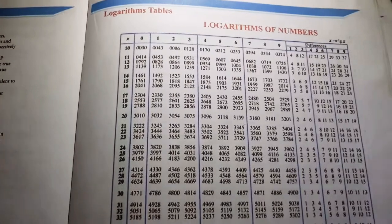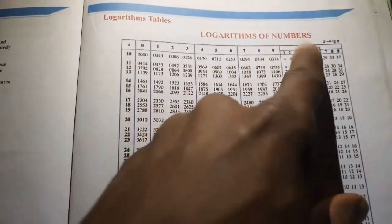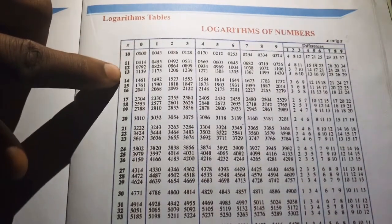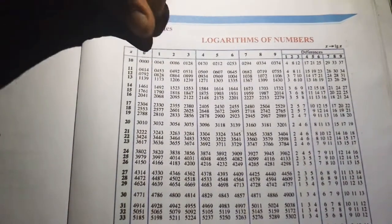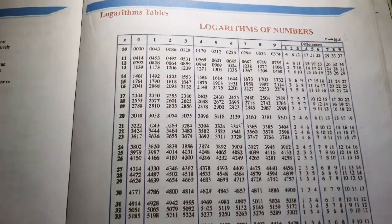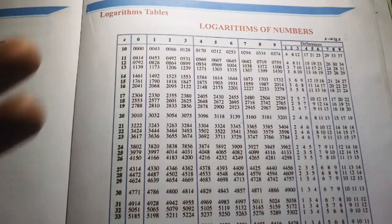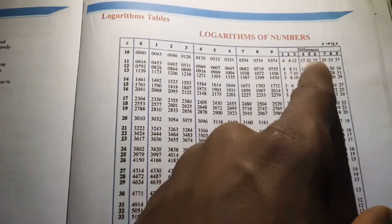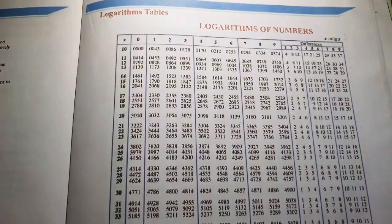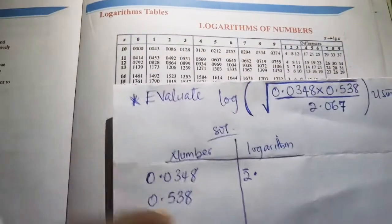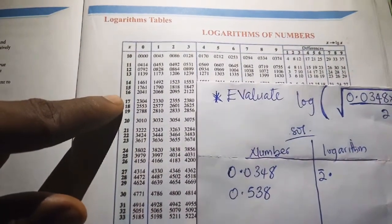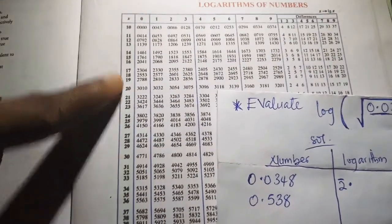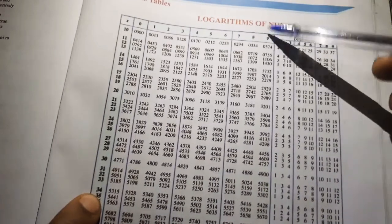The log table is headed 'Logarithm of Numbers.' The first column contains the first two significant figures, then columns from zero to nine represent the third significant figure, and the last column of differences handles the fourth significant figure. For 0.0348, we group the first two digits as 34, locate 34 in the table, then look under the column for 8. This gives 5416.